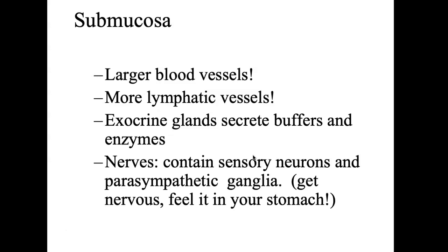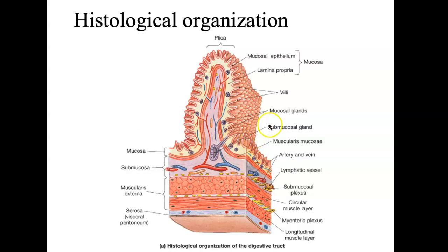The submucosa also contains nerves — sensory neurons and parasympathetic ganglia. Tell me you haven't felt this: you get nervous and you feel it in your digestive system, like a pit in your stomach. That's real. There are these sensory neurons in the submucosa — in yellow in the picture, alongside the vein and artery in blue and red — forming these plexus, which are all neurons.